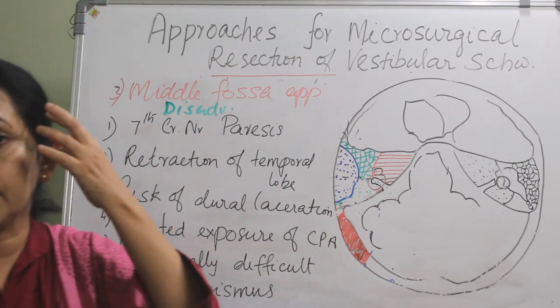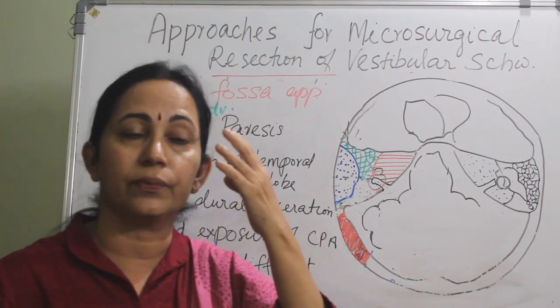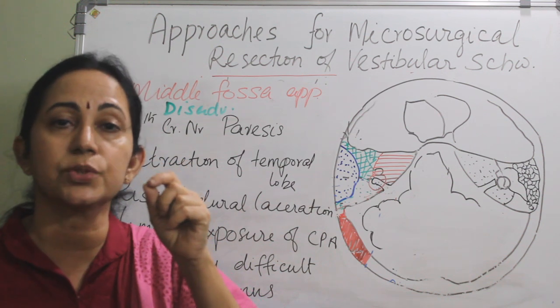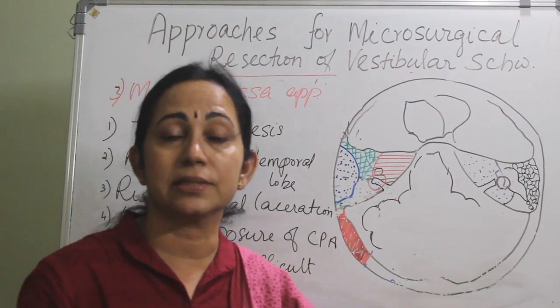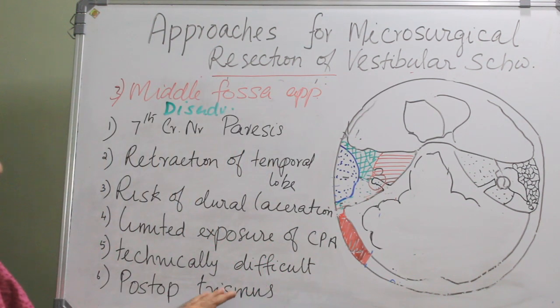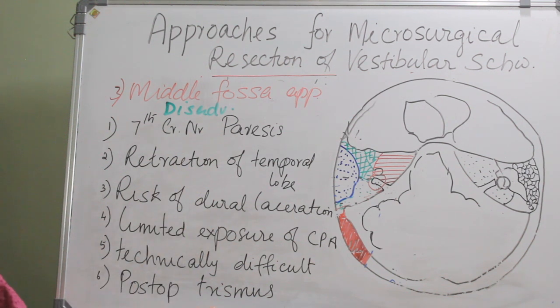Post-operative trismus can occur because at the time of incision and craniotomy, there is a chance of injury to the temporalis muscle, which leads to post-operative trismus. So these are the disadvantages of the middle fossa approach.